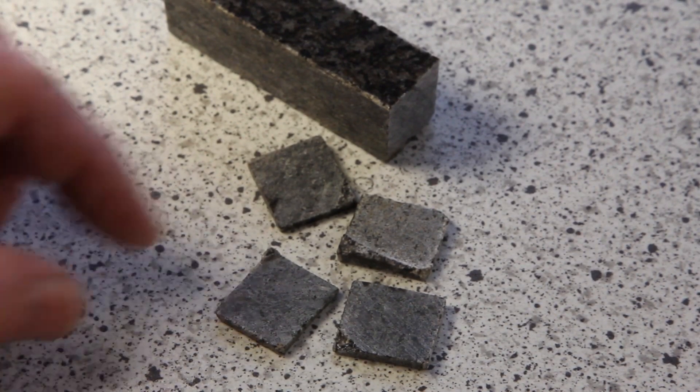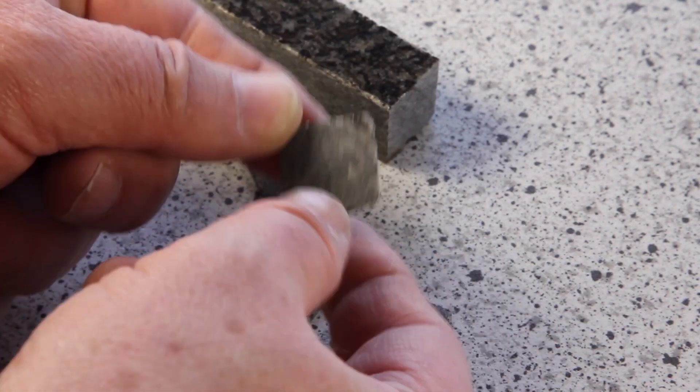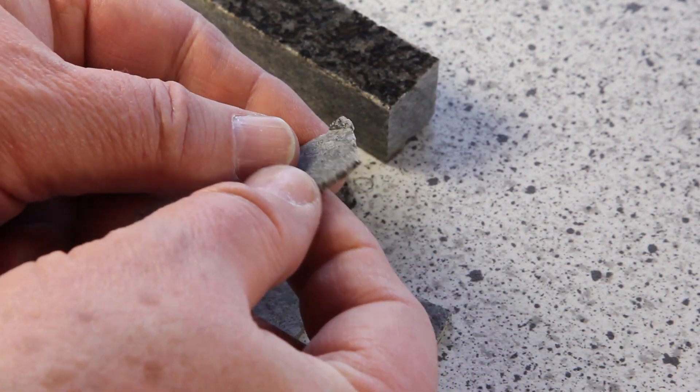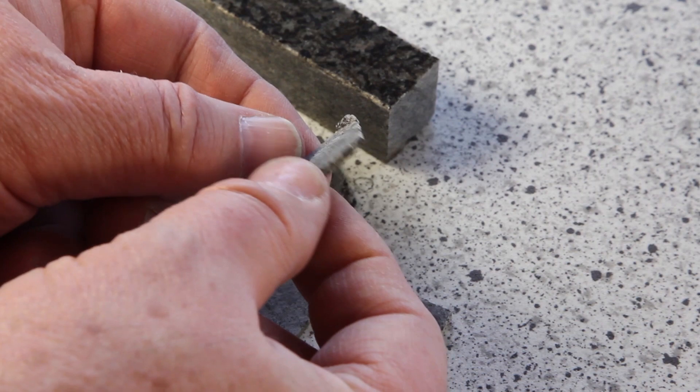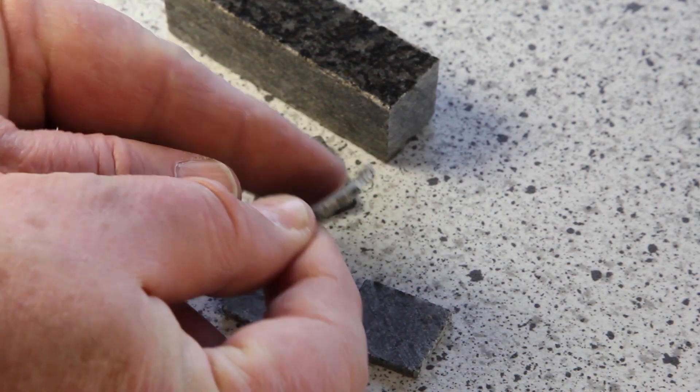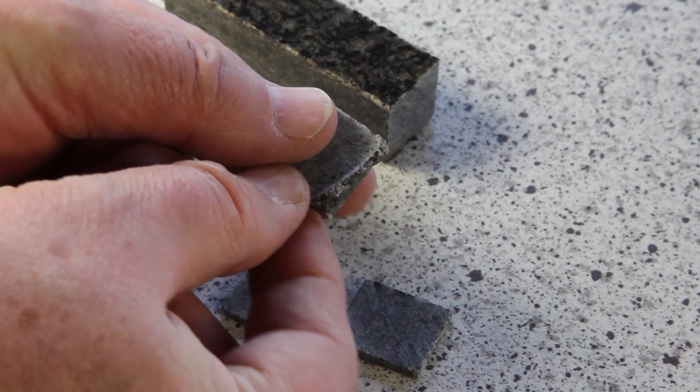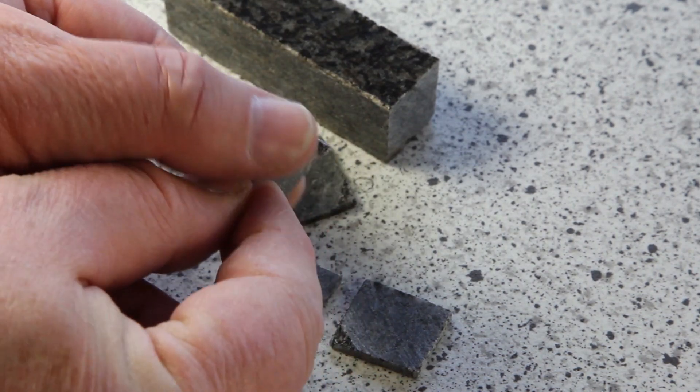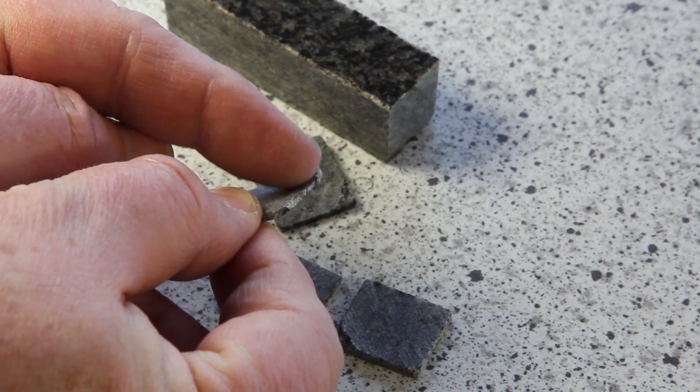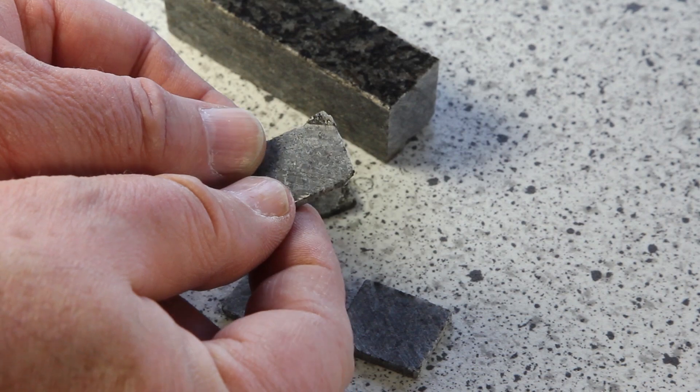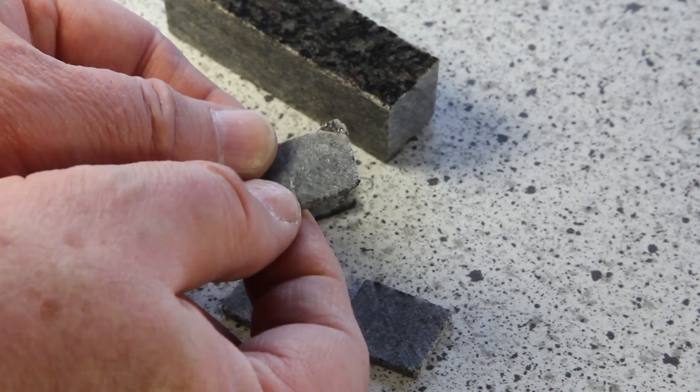I have to make sure that at least one side of the sample is more or less flat. Here you can see this side isn't flat, this side isn't either, so I have to grind this side first before I can glue it onto the slide.